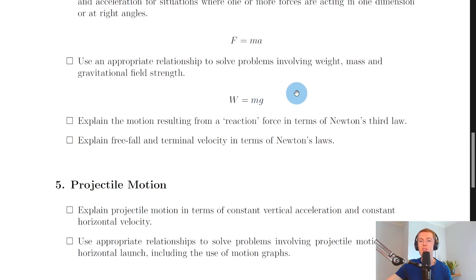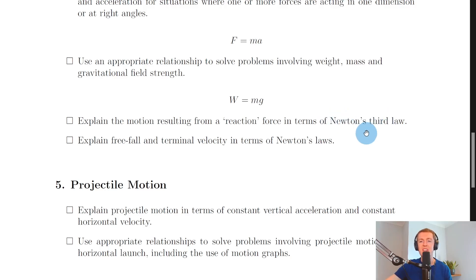You get values of g on the datasheet, but it helps to remember: g on Earth is 9.8 N/kg, g on the Moon is 1.6 N/kg, and g on Mars and Mercury are both 3.7 N/kg. You also need to explain the motion resulting from a reaction force in terms of Newton's third law — the idea of Newton pairs where we have an action and a reaction force. You might be given an action force and asked to state what the reaction force is.